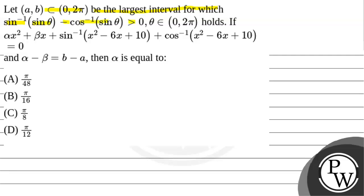If αx² + βx + sin⁻¹(x² - 6x + 10) + cos⁻¹(x² - 6x + 10) = 0 and α - β = b - a, then α is equal to